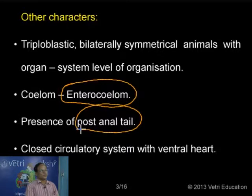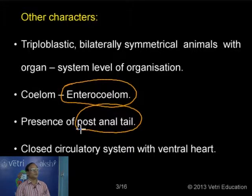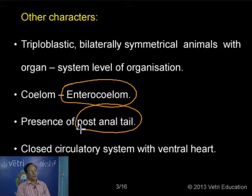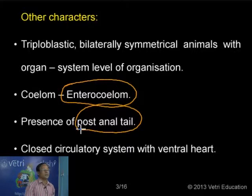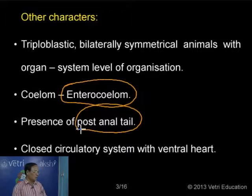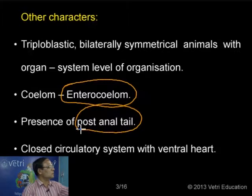What about the nature of the circulatory system? In the invertebrate category, it may be open type or closed type. But in the case of all chordates, we have a closed circulatory system - whether urochordata, cephalochordata, jawless vertebrates, or jawed vertebrates. The circulatory system is of closed type, with a heart which is ventral in position. In invertebrate groups, if the heart is present, it is located on the dorsal side. But in all vertebrates including human beings, the heart is located on the ventral side.